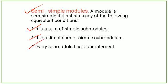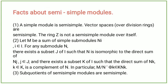Facts about semi-simple modules. First, a simple module is semi-simple. Vector spaces over division rings are semi-simple. The ring Z is not a semi-simple module over itself.